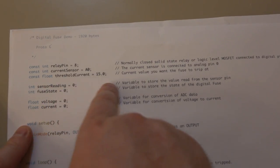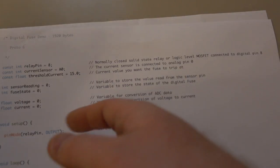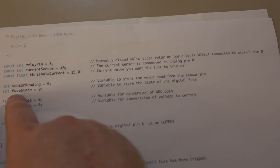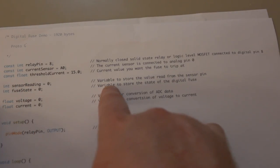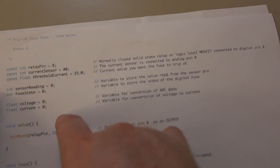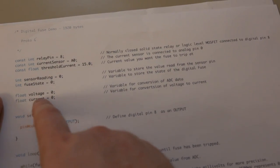Next we have the sensor reading. This is just a variable to store the values read from the sensor pin. Fuse state - this is a variable to store the state of the digital fuse. And we have voltage and current.